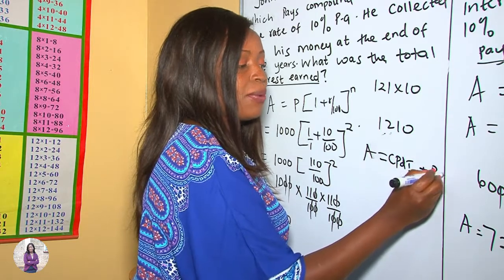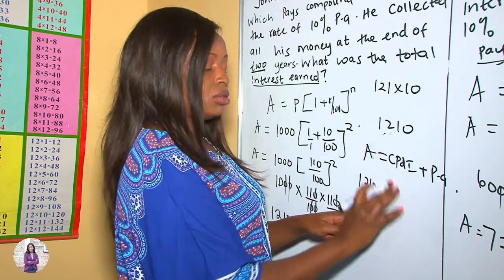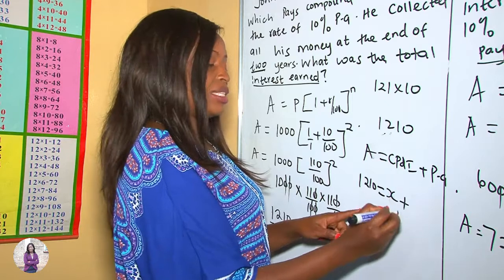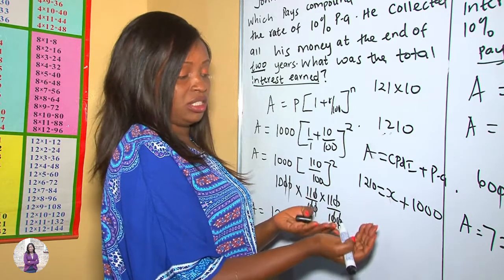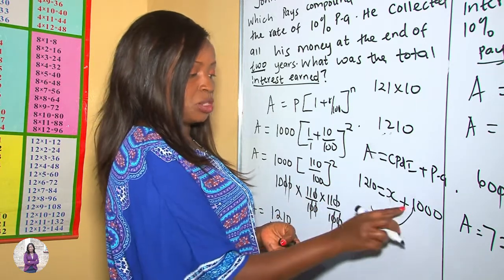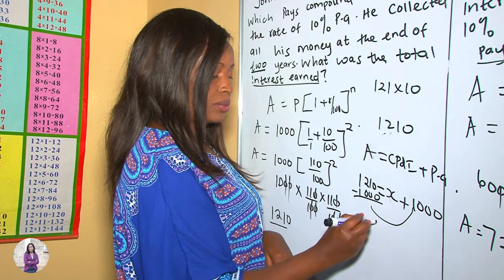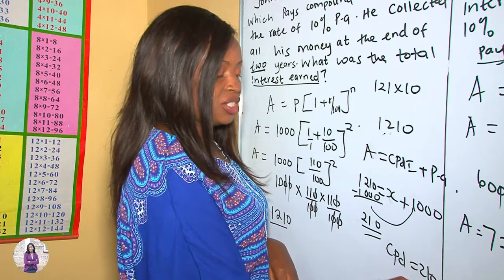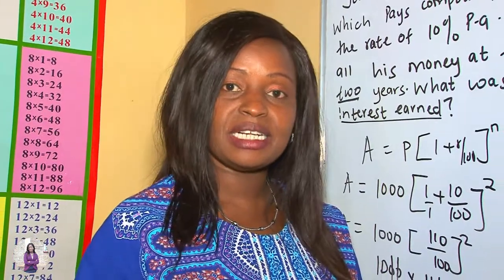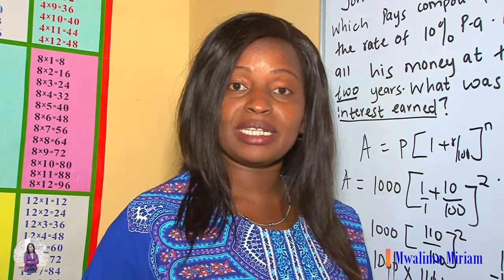To find the compound interest: Amount = CI + Principal, so 1,210 = CI + 1,000. Moving 1,000 to the other side: CI = 1,210 − 1,000 = 210 shillings. I wish you the best — please remember to subscribe, press the notification bell, share with your friends, and practice. Remember, practice makes perfect. Thank you for watching!